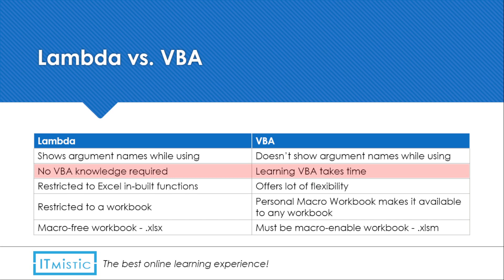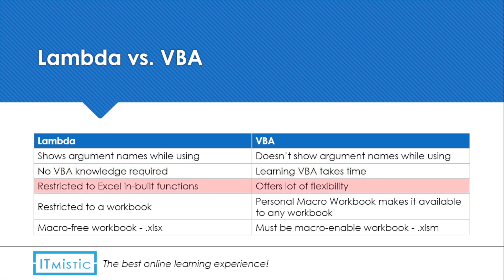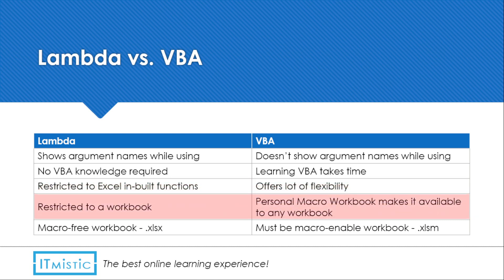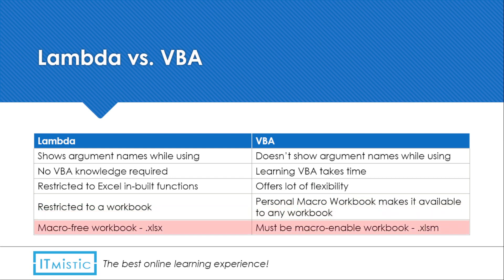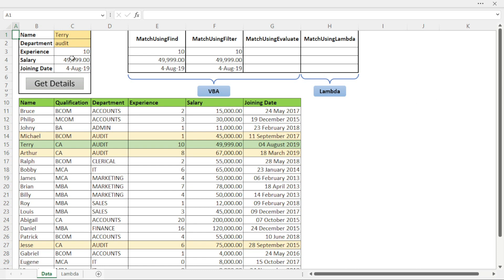With Lambda you do not need to learn VBA, whereas to create a function in VBA you need to learn it — and it takes time and experience. With Lambda we are restricted to using Excel's built-in functions, but VBA offers a lot of functionality and flexibility. Lambda functions are restricted to a workbook only, whereas if you record a macro in the personal macro workbook it is available to all workbooks. Also, with Lambda you need not save the file as a macro-enabled workbook, since it is a function not a macro — but with VBA you must save as a macro-enabled file or your macros are lost.